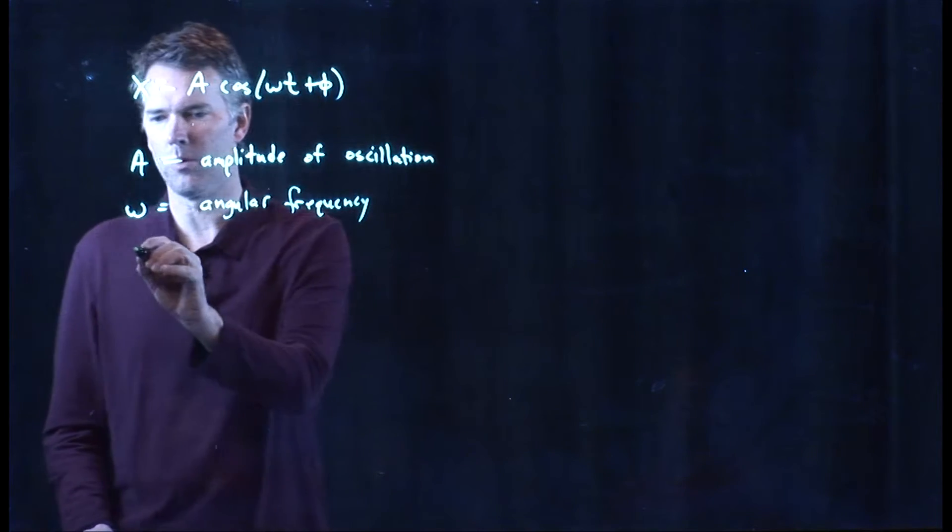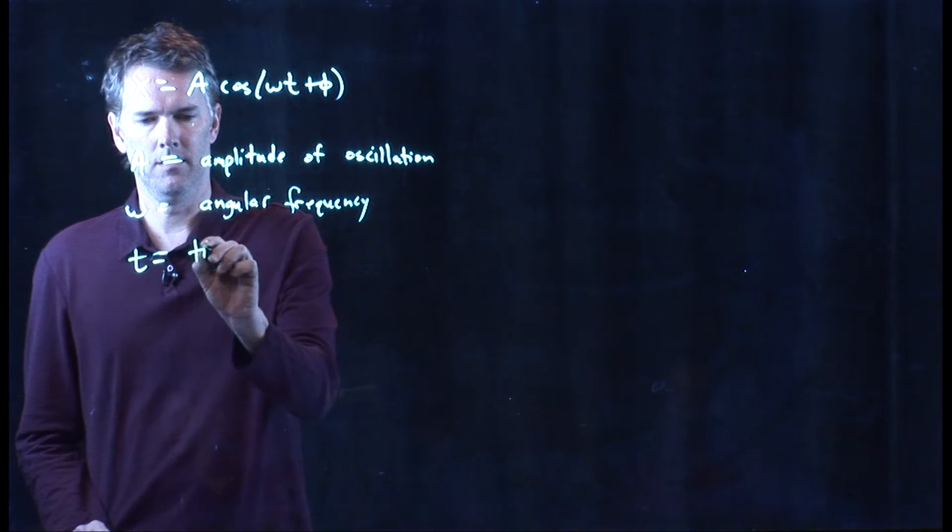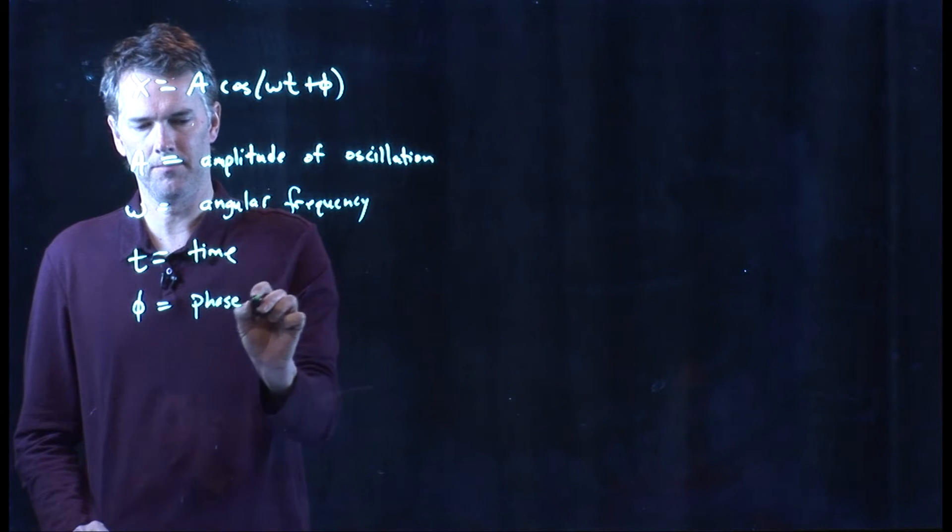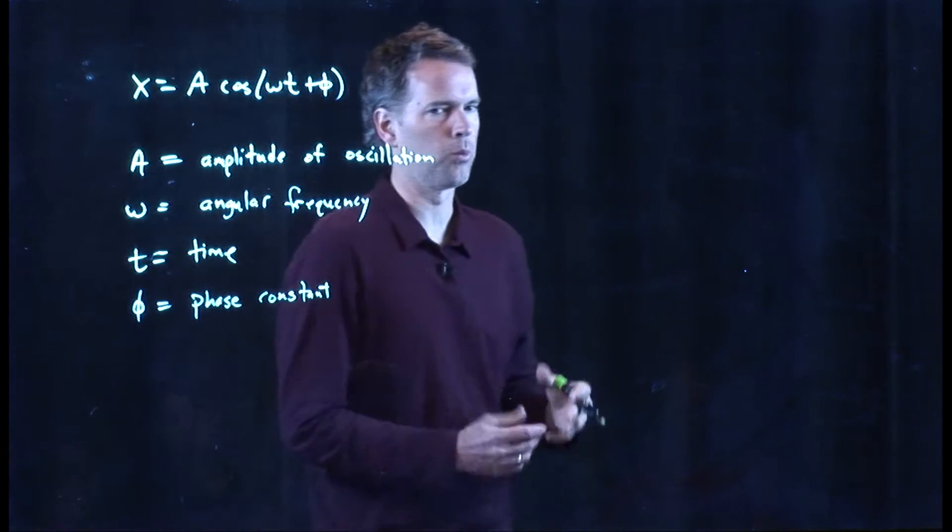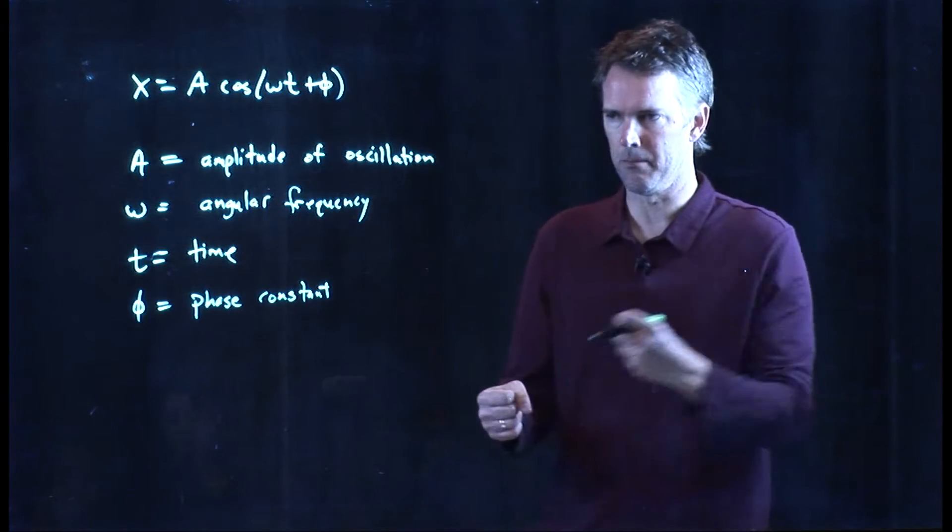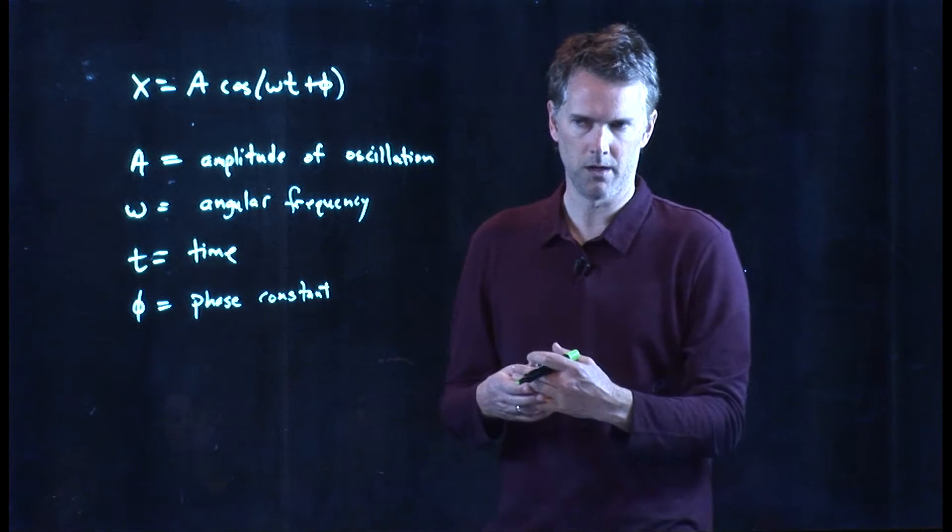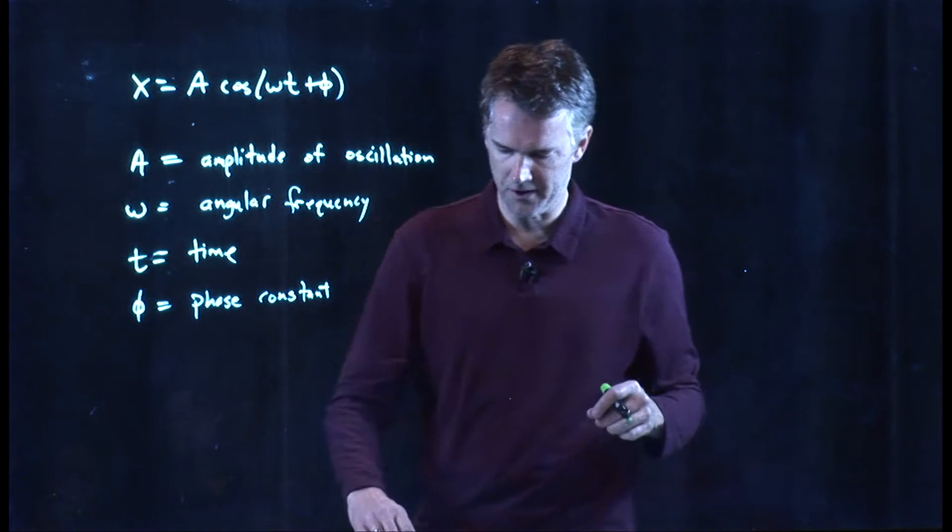T is, of course, time. And phi is what we call a phase constant. And that's really just where do you start. Did you start at maximum amplitude? Did you start at x equals zero? Did you start somewhere in between? It has to do with where that oscillation started.